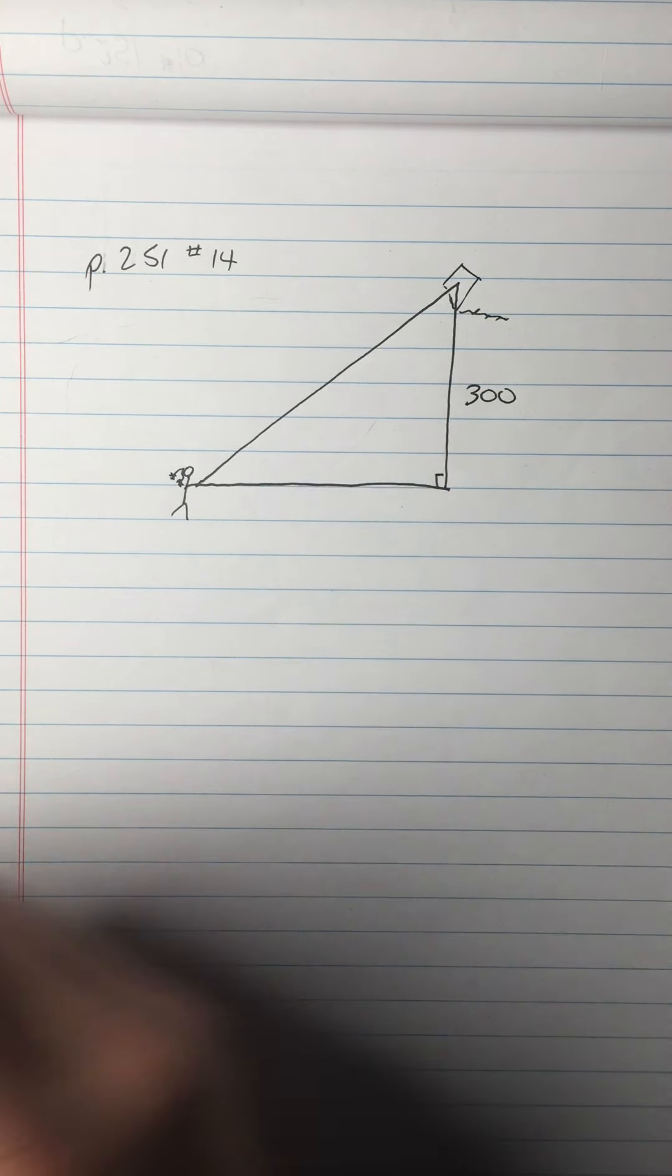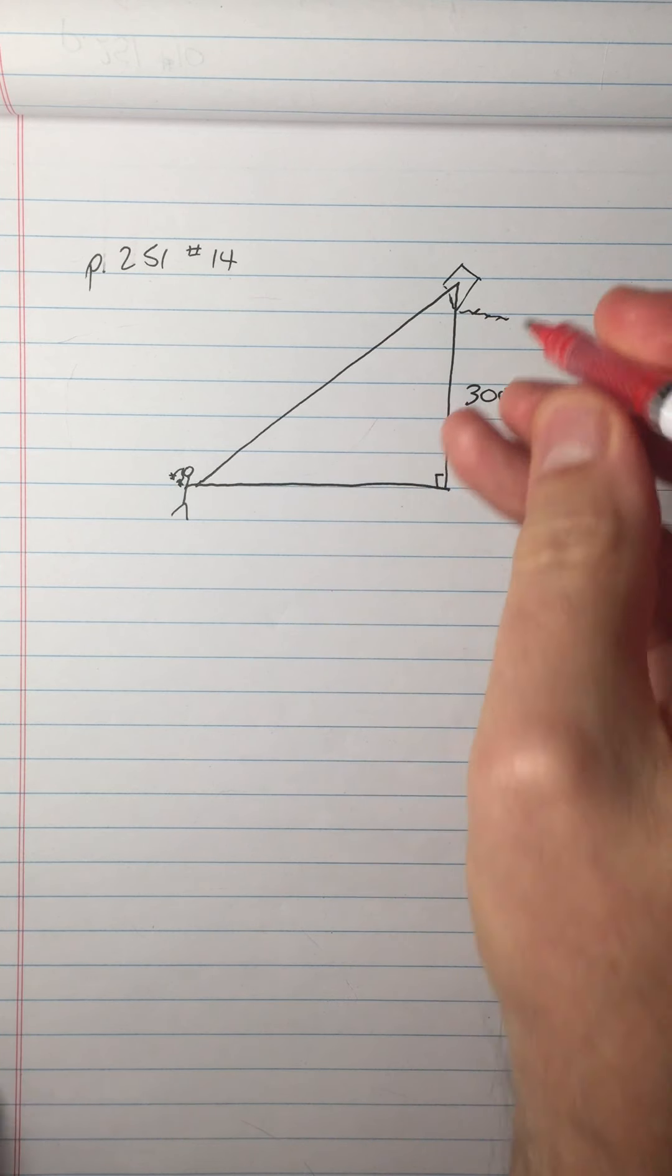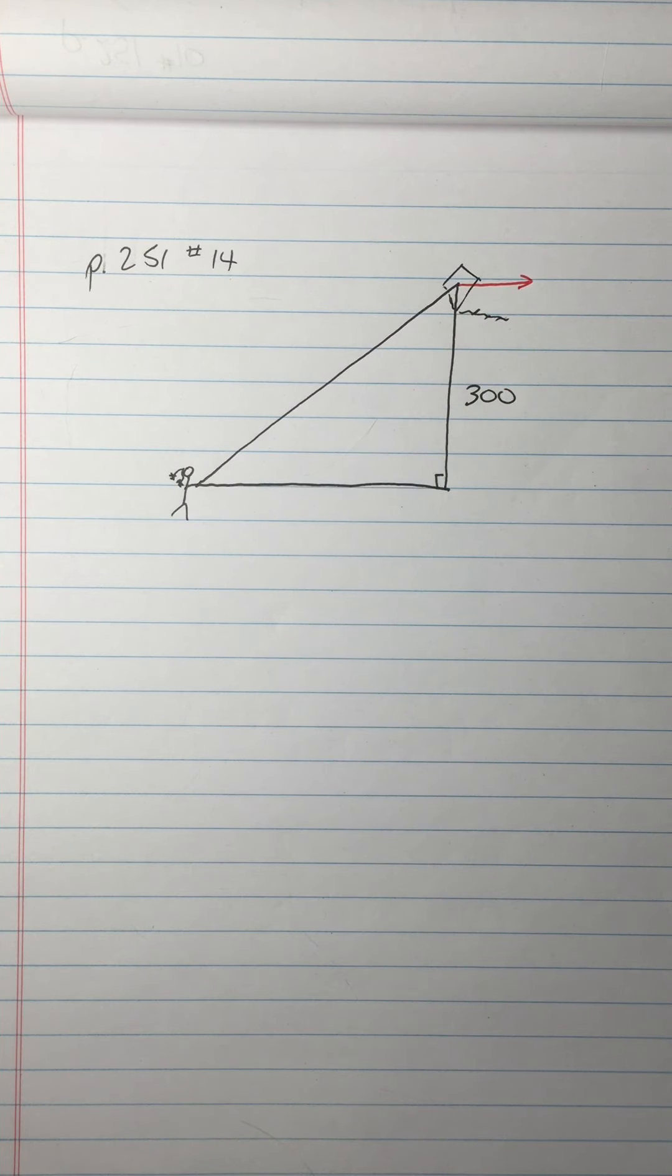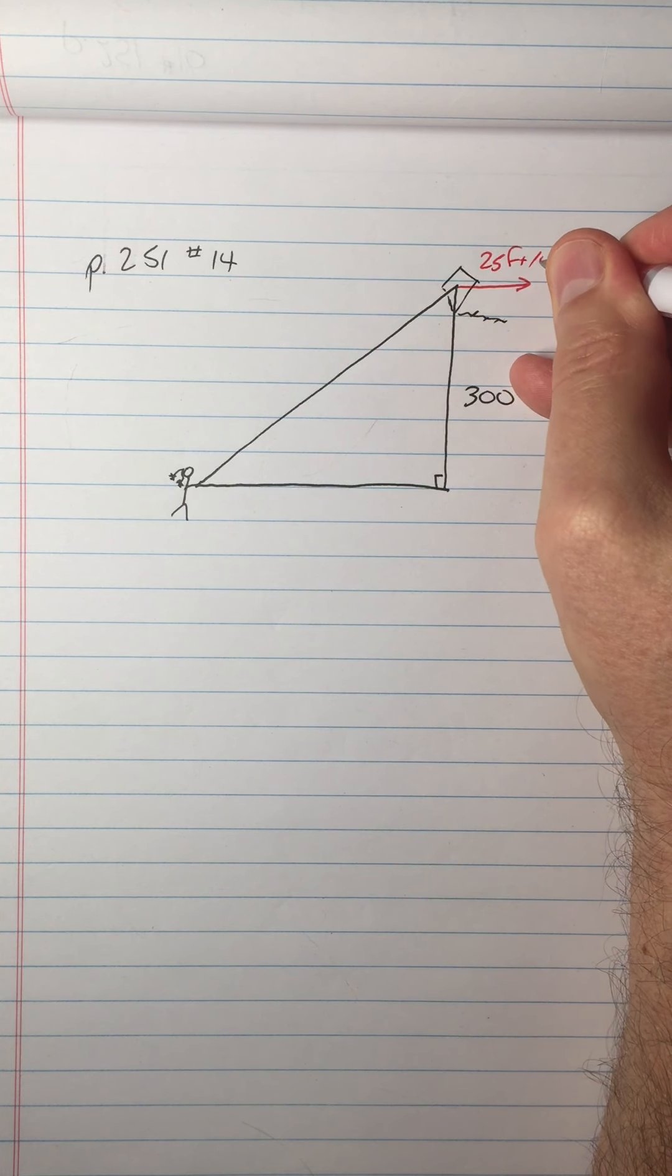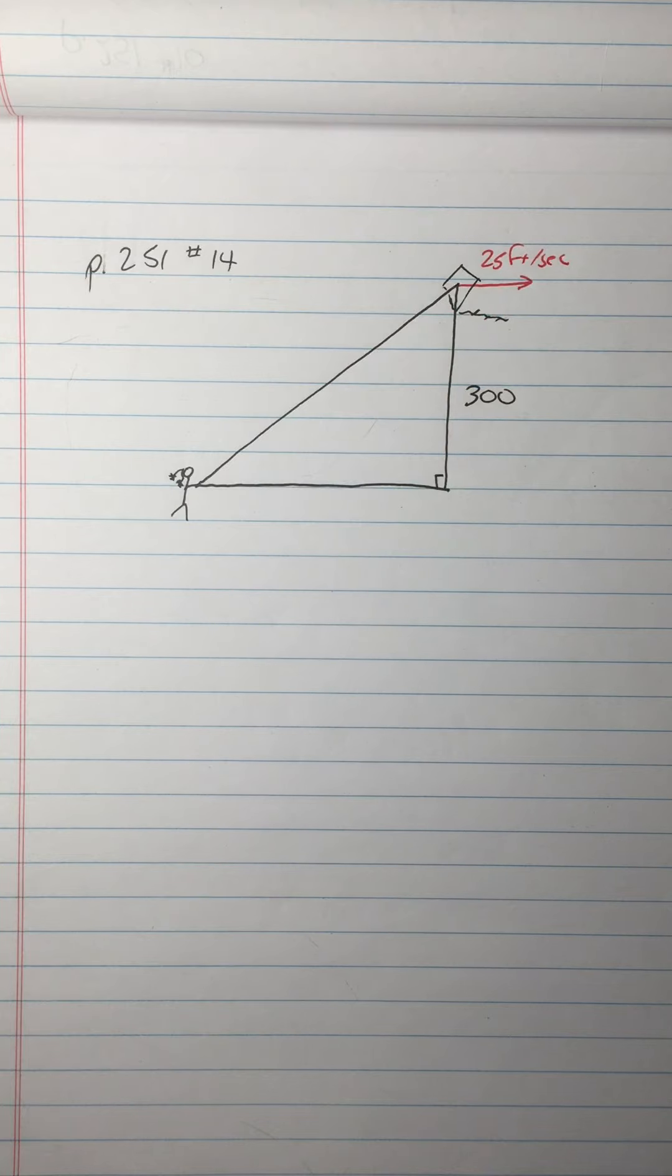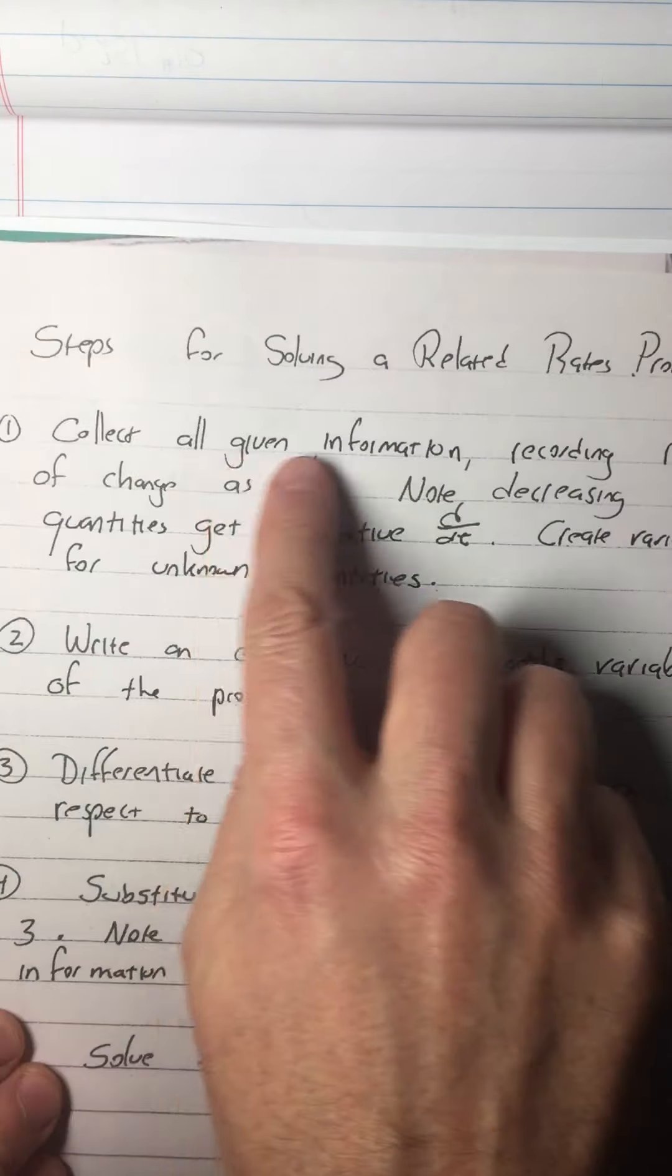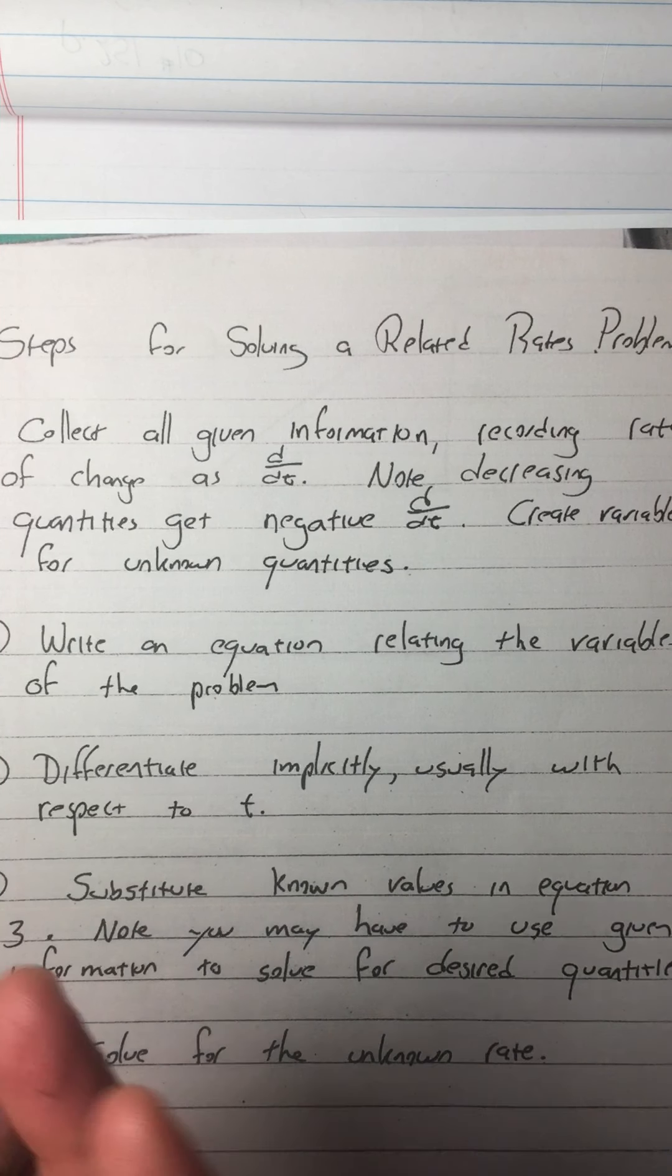Now we're also going to, because it didn't say anything about how tall Inga is, we're just going to forget about her height. She's Swedish, so she's probably not that tall anyway. And then draw a nice right triangle there. Because we know the kite is flying at a height of 300 feet. So we'll just put it there and not worry about her personal height.